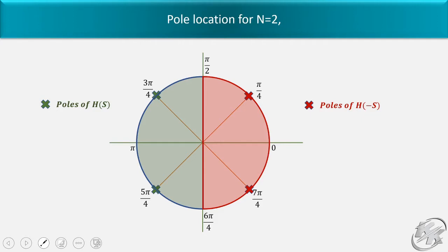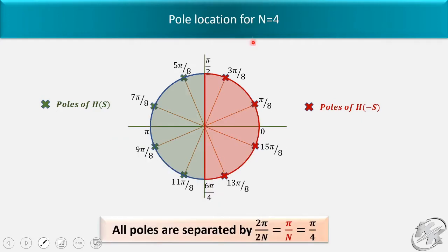The figure shows the pole location for n equal to 4. The poles are located at π/8, 3π/8, 5π/8, 7π/8, 9π/8, 11π/8, 13π/8, and 15π/8 — a total of 8 poles: 4 poles for H(s) and 4 poles for H(-s). All poles are separated by 2π divided by 2n total poles, so all poles are separated by π/n. In this case it is equal to π/4.